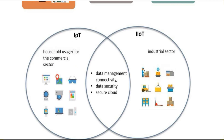IoT is for household and commercial sector use, while IIoT is for the industrial sector. Both share common criteria: data management, connectivity, data security, and secure cloud storage. To develop data security, data must be stored securely in the cloud.